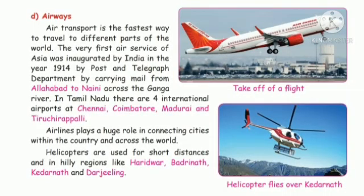In the evaluation part, we will see choose, match and true or false. First: choose the correct answer. Q1: Which of the following is an example of land transport? Option A: car, B: ship, C: helicopter, D: aeroplane. Answer: Option A, car. Q2: The first railway line was laid in — A: 2019, B: 1853, C: 1947, D: 1950. Answer: Option B, 1853. Q3: One of the major cities that connects the Golden Quadrilateral highways is — A: Chennai, B: Kanyakumari, C: Madurai, D: Trichy. Answer: Option A, Chennai.